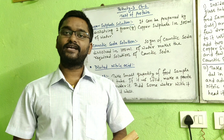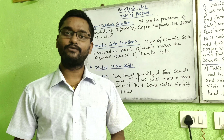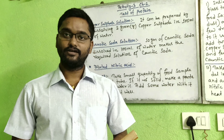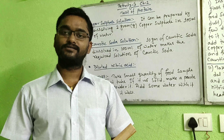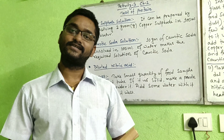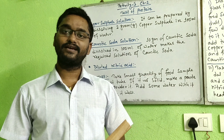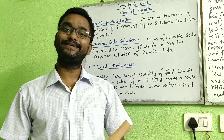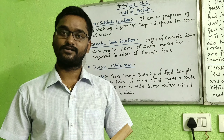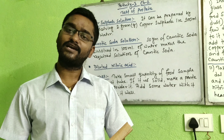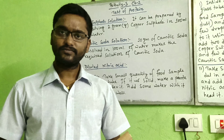To get better results, you should take food samples which have the maximum amount of protein. Today I will show you the test of protein with two types of food samples: pulses — you can take any kind of pulses because pulses have a higher amount of protein — and also bean dust, which also has a high protein amount. You can take other food samples in which protein amounts are more.